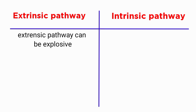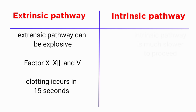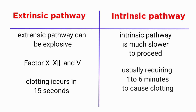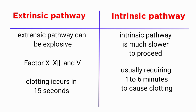An important difference between the extrinsic and intrinsic pathways is that the extrinsic pathway can be explosive. Once initiated, its speed of completion to the final clot is limited only by the amount of tissue factor released from the traumatized tissues and by the quantities of factors 10, 12, and 5 in the blood. With severe tissue trauma, clotting can occur in as little as 15 seconds. The intrinsic pathway is much slower, usually requiring one to six minutes to cause clotting.